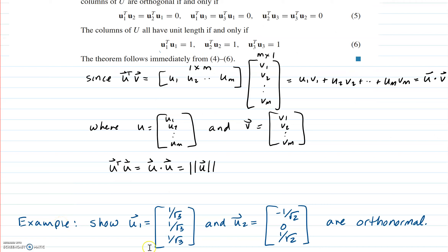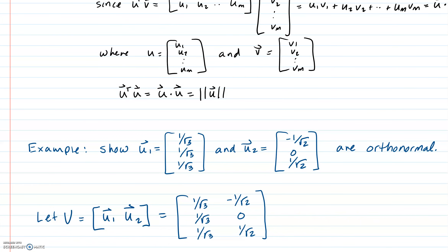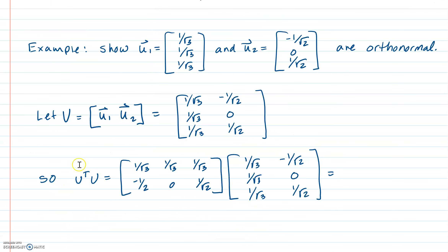Let's look at an example. Show that U1 = [1/√3, 1/√3, 1/√3] and U2 = [-1/√2, 0, 1/√2] are orthonormal. Using this theorem, I'm just going to let U be the matrix with columns U1 and U2, and all I've got to do is show that U transpose times U is the identity. U transpose is obtained by taking these rows and making them columns. This is a 2-by-3 times a 3-by-2, so we end up with a 2-by-2 matrix.